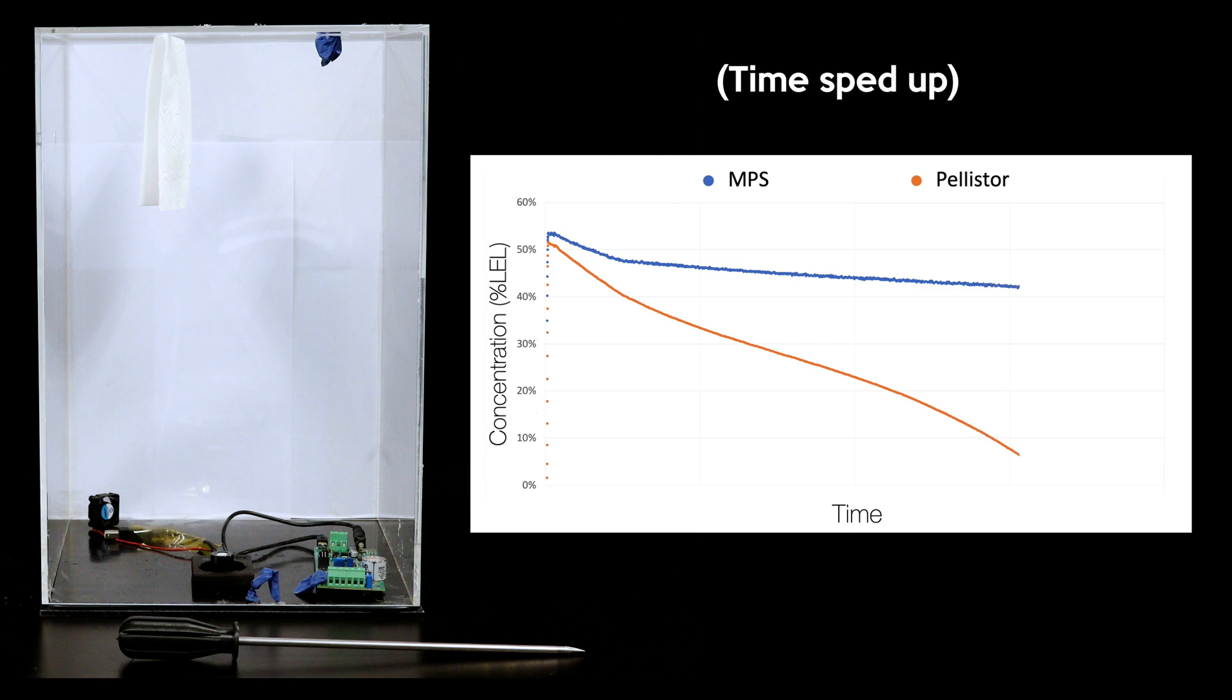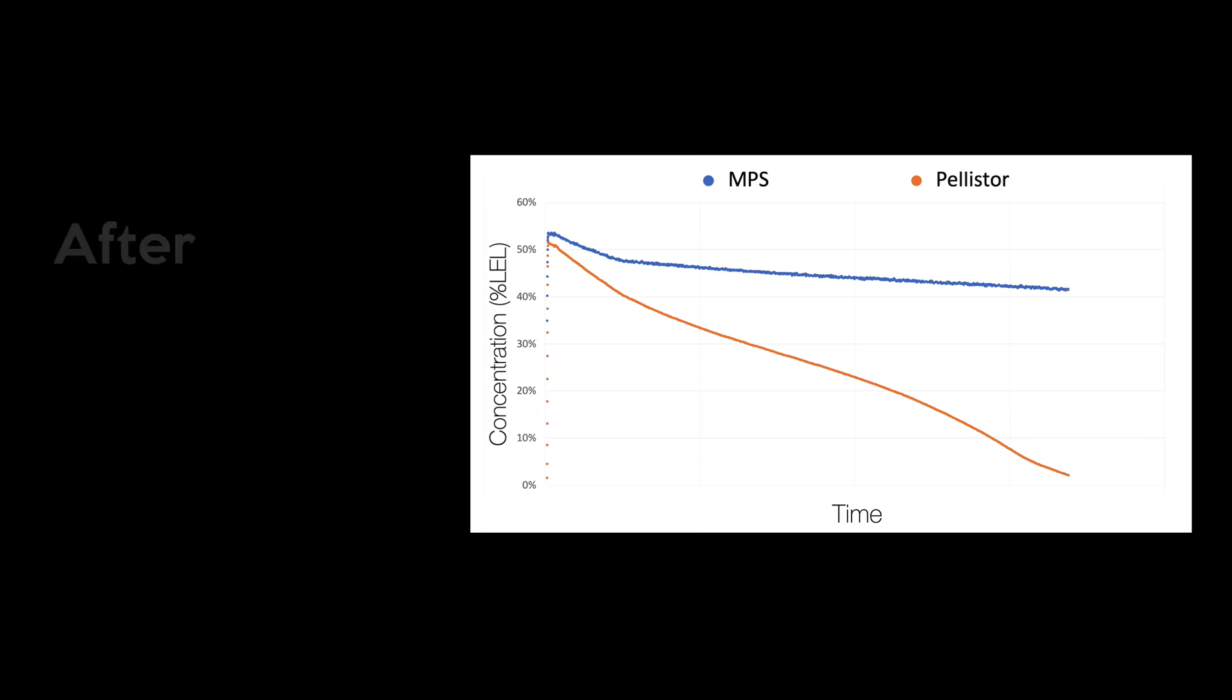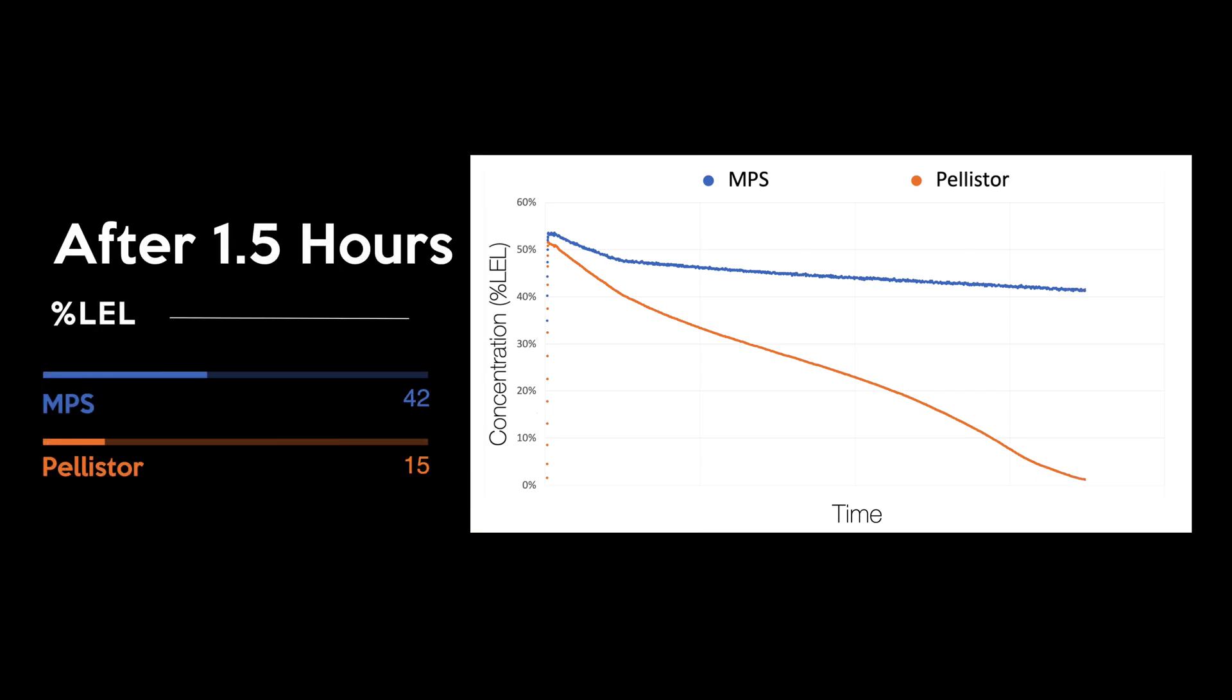Methane slowly leaches out of the chamber over the course of the test since it isn't perfectly airtight. After an hour and a half, the pellistor is reading 15% LEL while the MPS is reading 42% LEL.